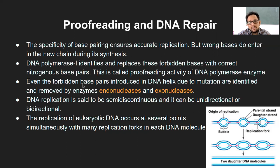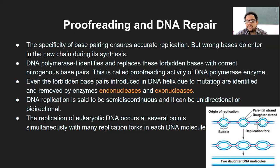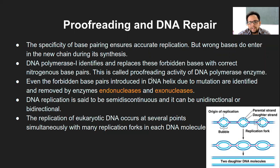All these possibilities can lead to certain wrong bases attaching to the complementary strand during DNA replication. DNA polymerase 1 will identify and replace these forbidden bases — meaning wrongly placed bases — with the correct nitrogenous base pair. This process is the proofreading activity of DNA polymerase. Even these forbidden base pairs introduced due to mutations are identified, and they are subsequently removed by the endonucleases or exonucleases.